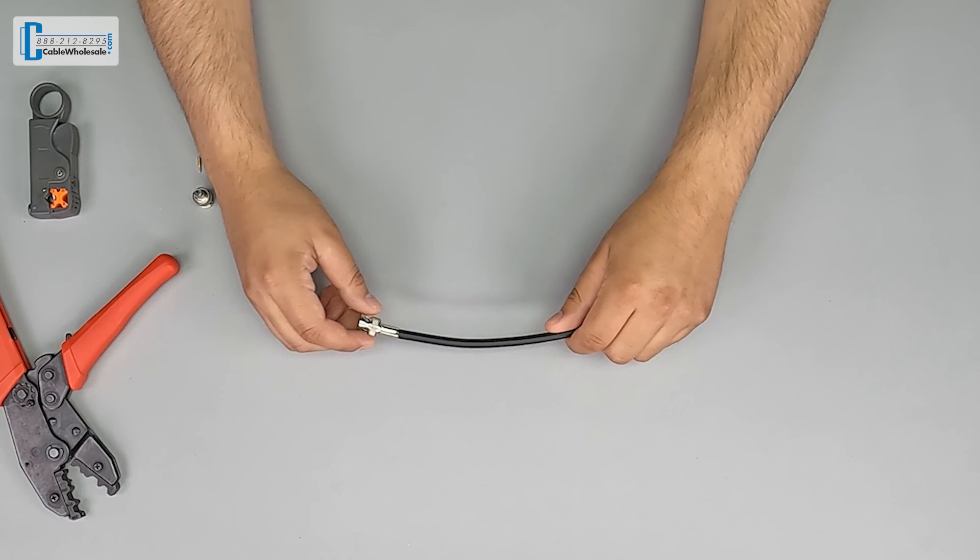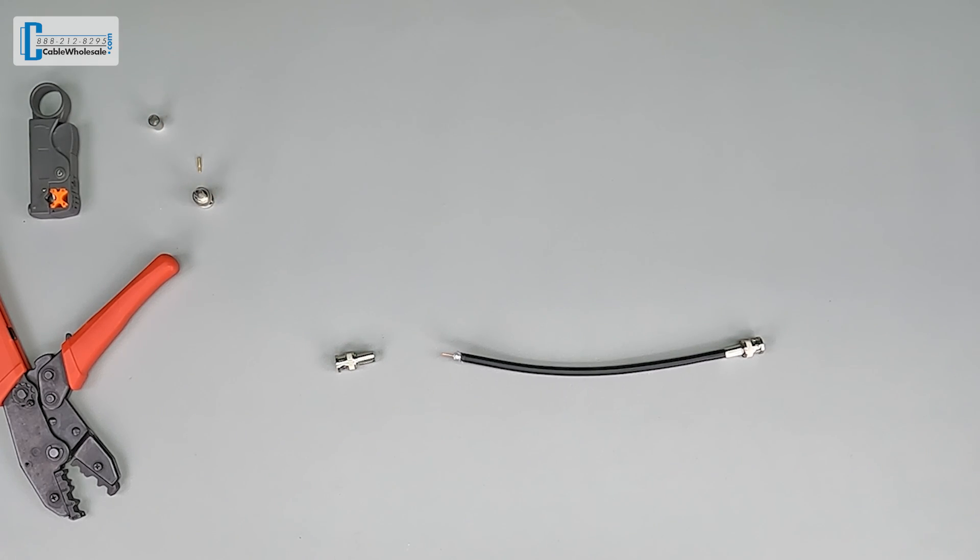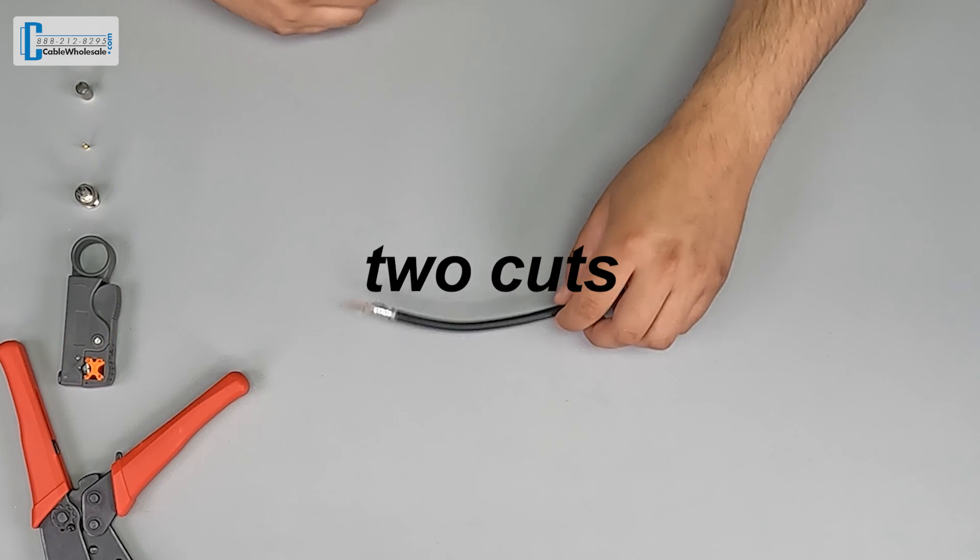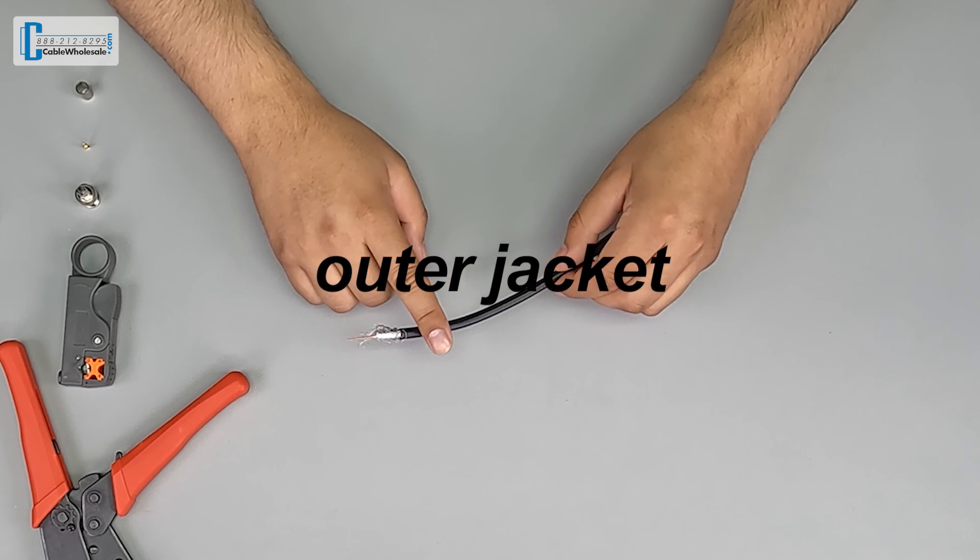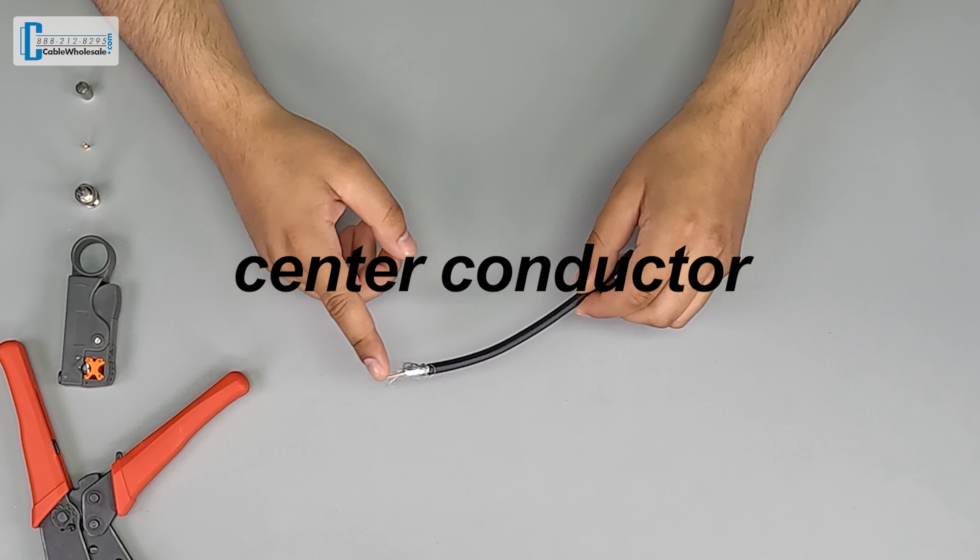In the beginning of the video, you saw me pull apart a cable that was improperly terminated. More often than not, this is due to improper preparation of the cable for termination. When stripping a coax cable, there are two cuts made on the cable. The first cut removes the outer jacket, the braid, and the dielectric, which exposes the center conductor.